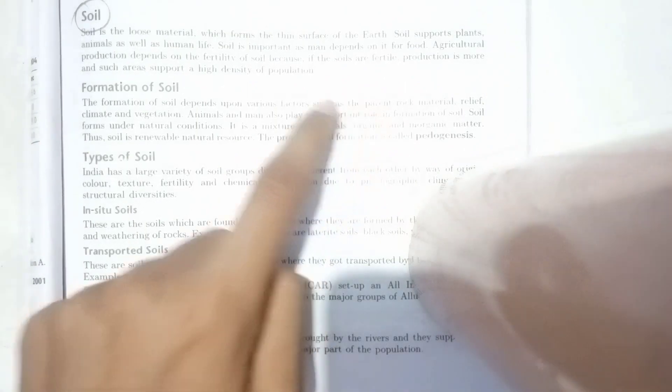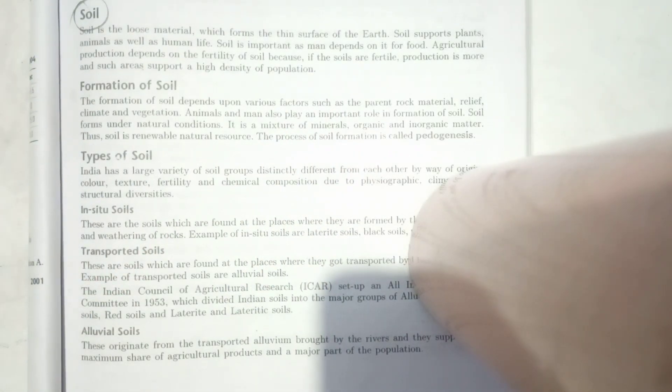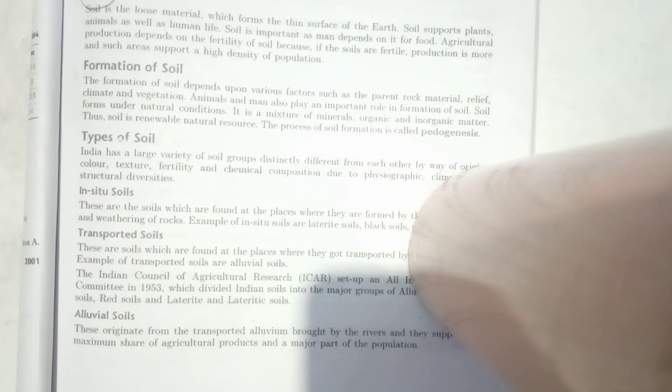is formed by parent rock material, climate, vegetation, animals, etc. The four main factors in the formation of soil that you have to write in your notebook are: first is parent rock, second is relief features, third is climate, and fourth is natural vegetation.